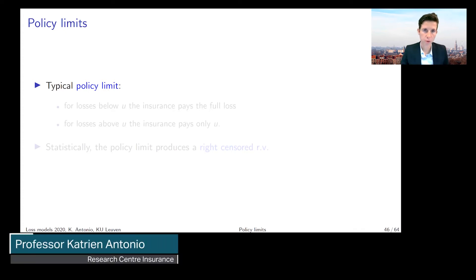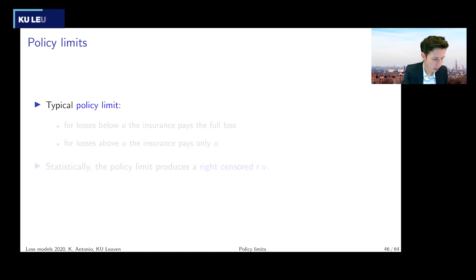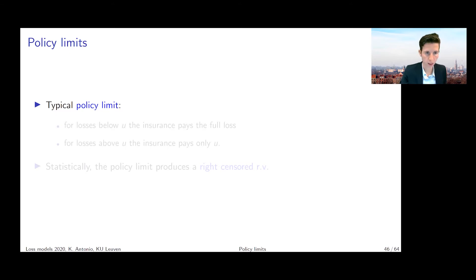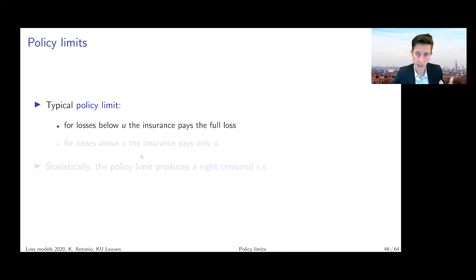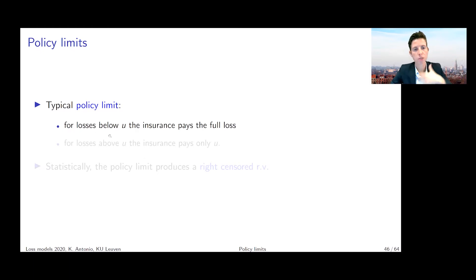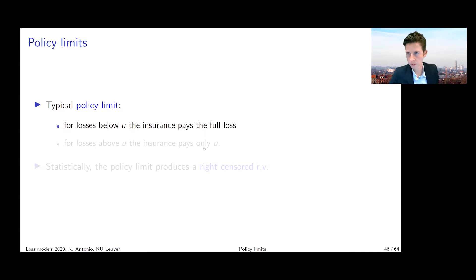We want to step to yet another type of policy modification: the so-called policy limit. If we look at a policy limit, losses below a value U — where U is the policy limit value — the insurance is going to pay out the full loss. But if you have a loss above U, then the insurance only pays the value of U.